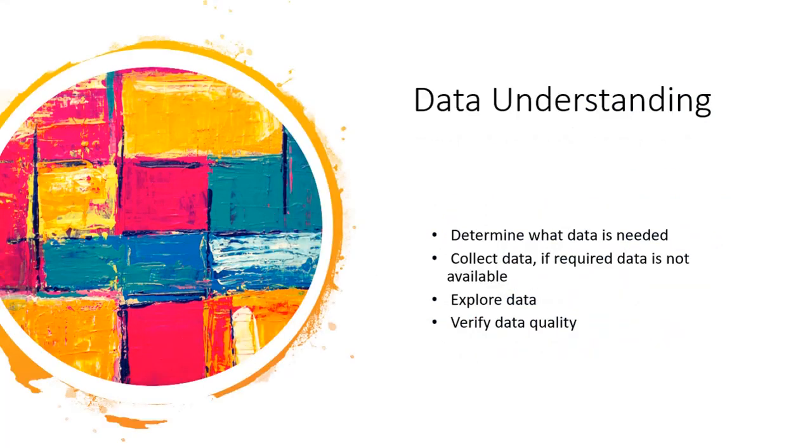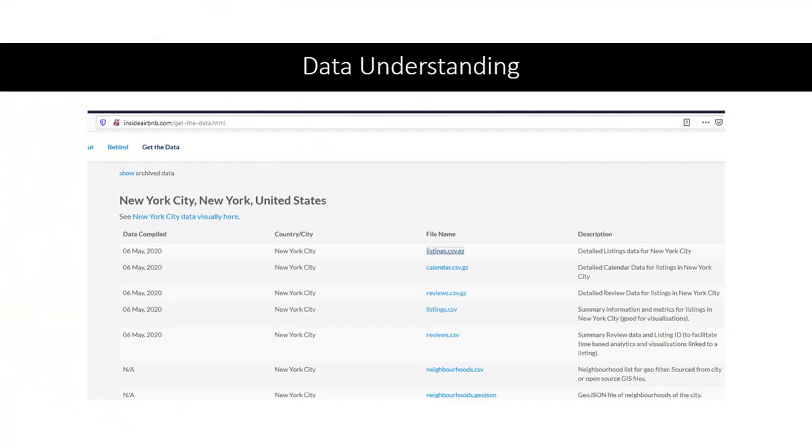The second phase is understanding the data. We need to determine what data is needed, collect it, explore it, and make sure the quality is high. In this particular example, we can go to a website that houses Airbnb data. Here's New York City. I would have to go backwards in time, but this is May 2020. And we see several different data sets here. This particular one, when you open it and download it, it's in a CSV file.